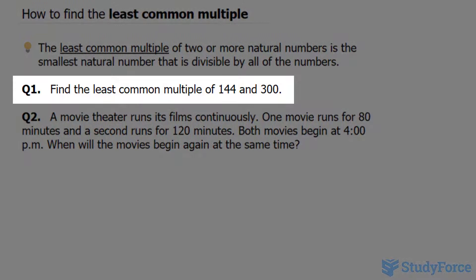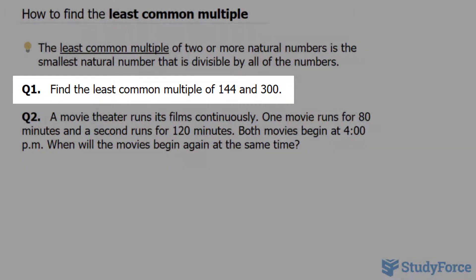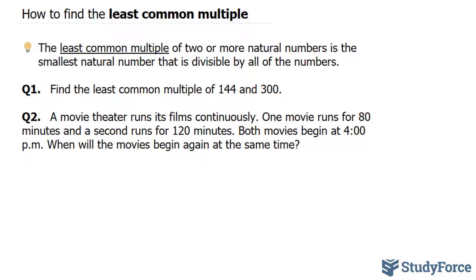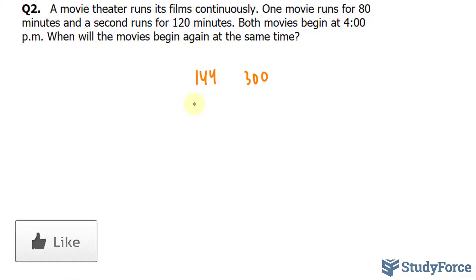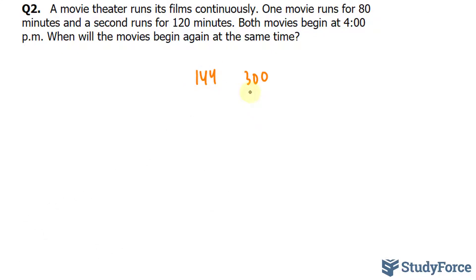Let's start with question number one. We have to find the least common multiple of 144 and 300. I'll show you two methods to do this. The first method involves writing out the numbers 144 and 300 horizontally. Once you've written your numbers, you want to find a prime number that is equally divisible into both. You can start with two, but a better option would be three.